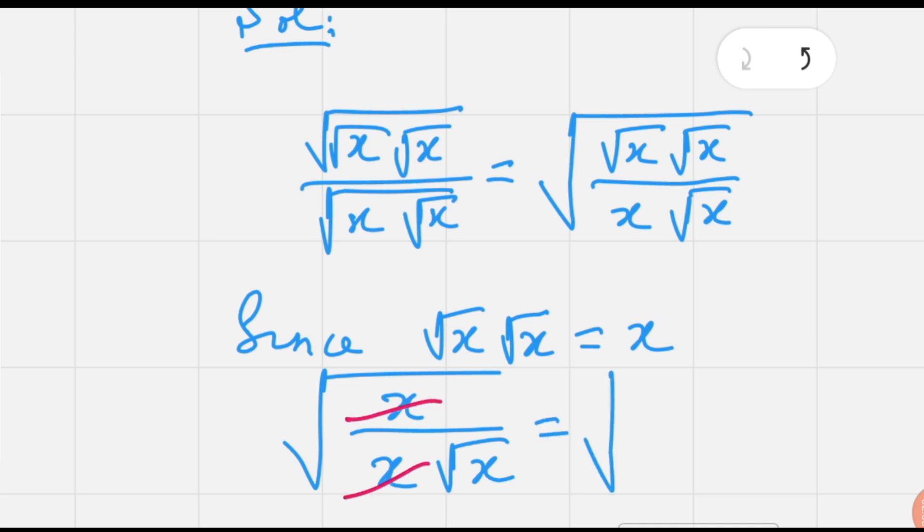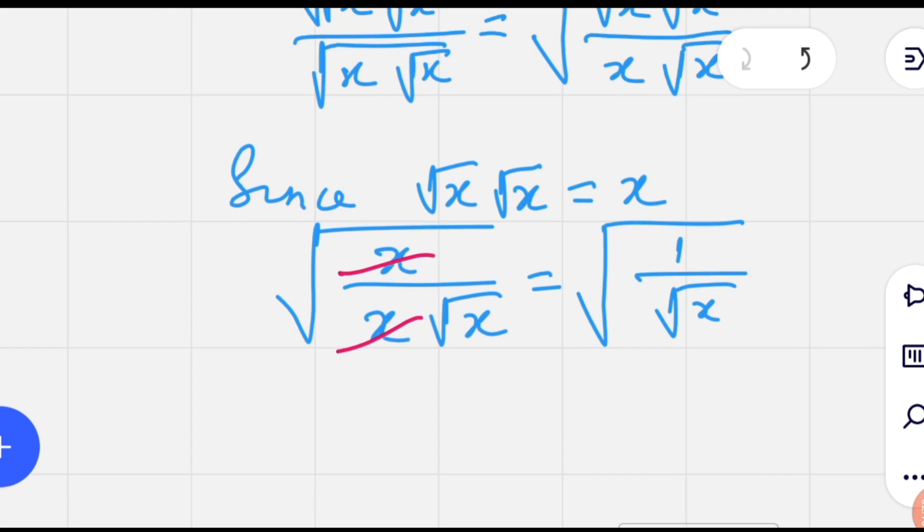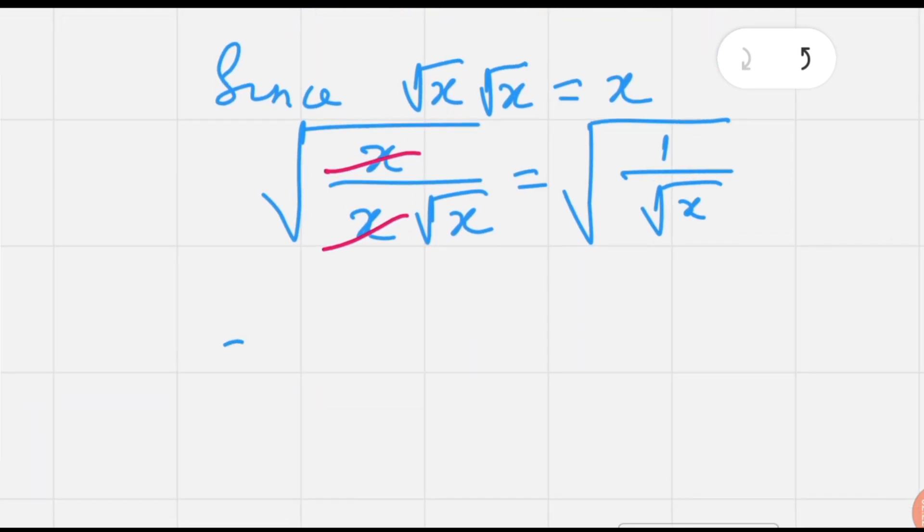So that we have under the root one over under the root x. Since square root of one is one only, so we have one over under the root of square root x. Since square root of x is equal to x to the power one by two.